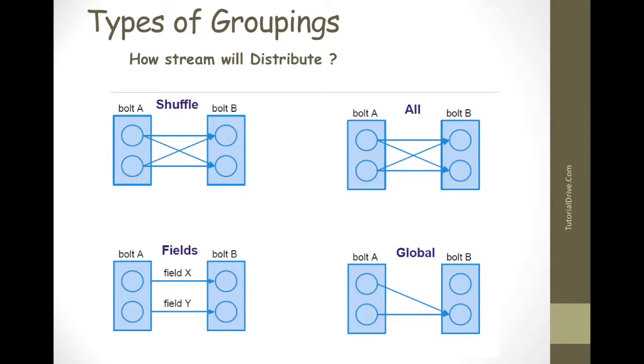And the next one is global grouping. Global grouping sends tuples generated by all the instances of a source to a single target instance, specifically the task with lower id. So all the messages will be sent to a task with lower id. A general use case of this type is when there needs to be a reduced phase in your topology where you want to combine results from previous steps in the topology in a single bolt. It's like we are collecting data from all the bolts, and if you want to sum it up, in such scenarios we will use global grouping.